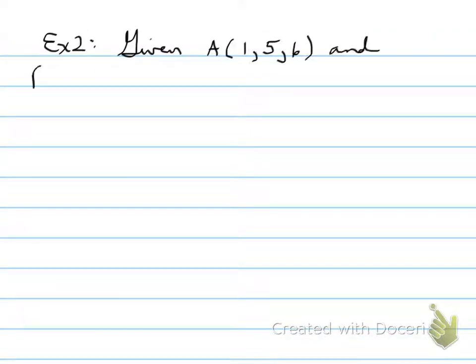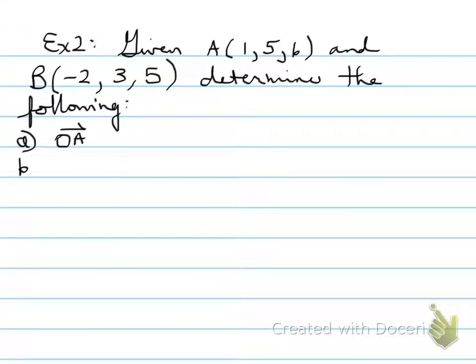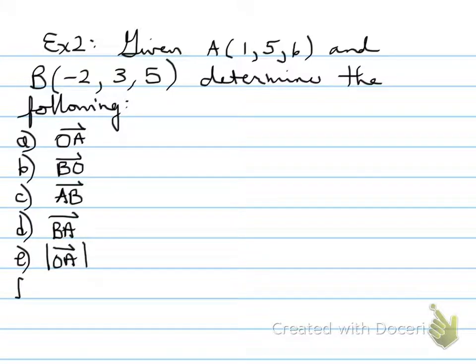Example number 2. If you're given a point A and a point B, you're asked to determine the following: vector OA, vector BO, vector AB, vector BA, and the magnitude of OA and magnitude of BA. Let's put at the top: O, just like in 2-space, O in 3-space means the coordinates of the origin, which are (0, 0, 0).